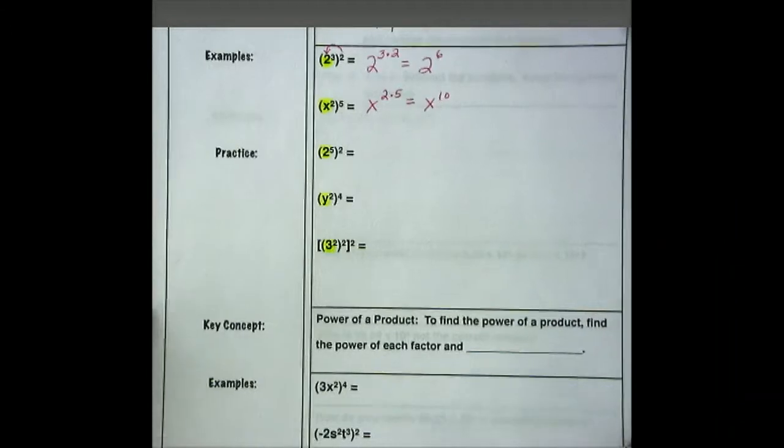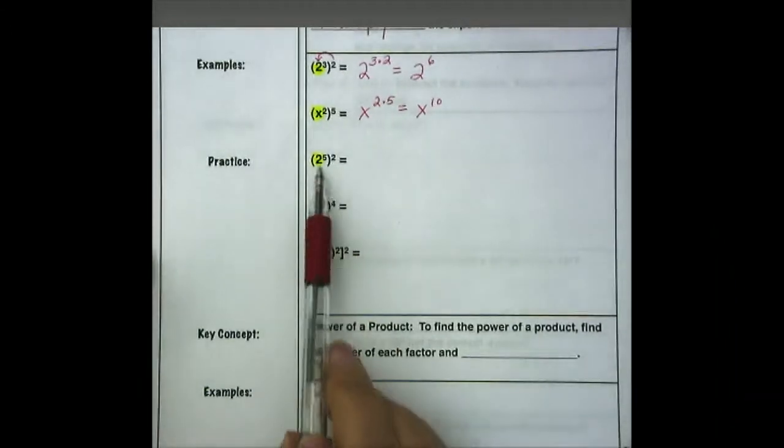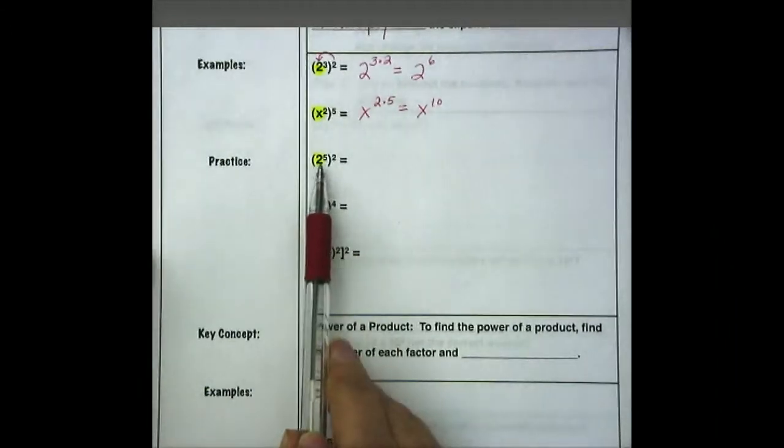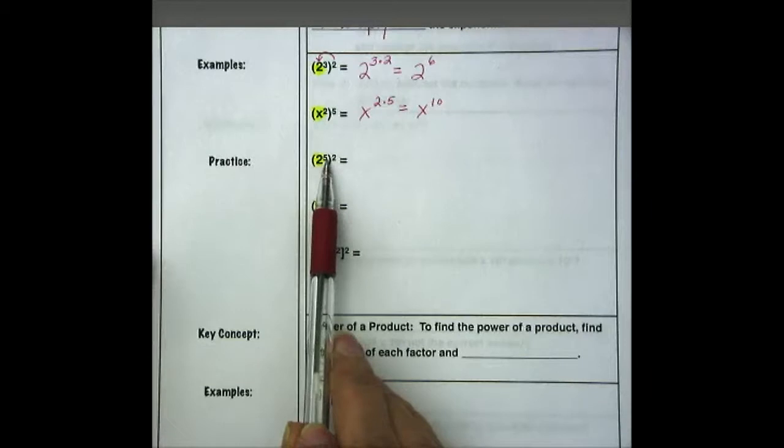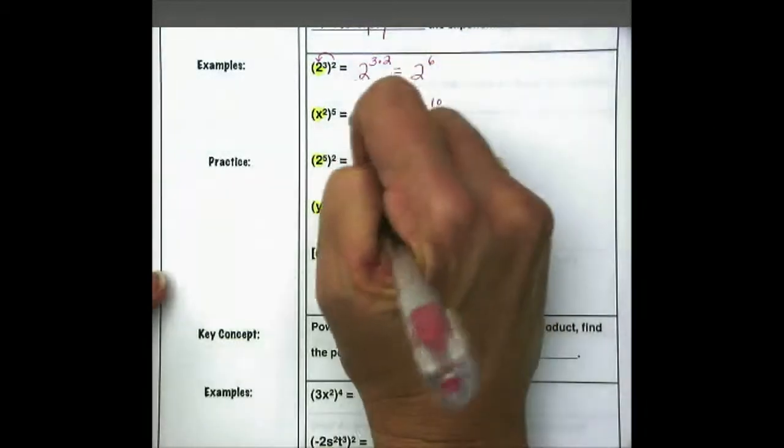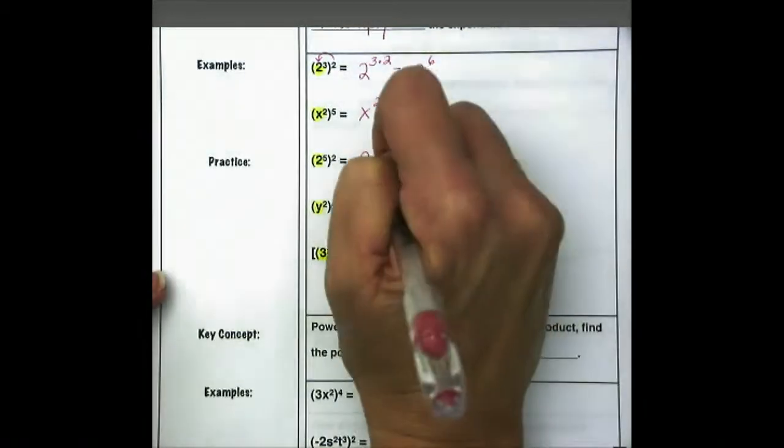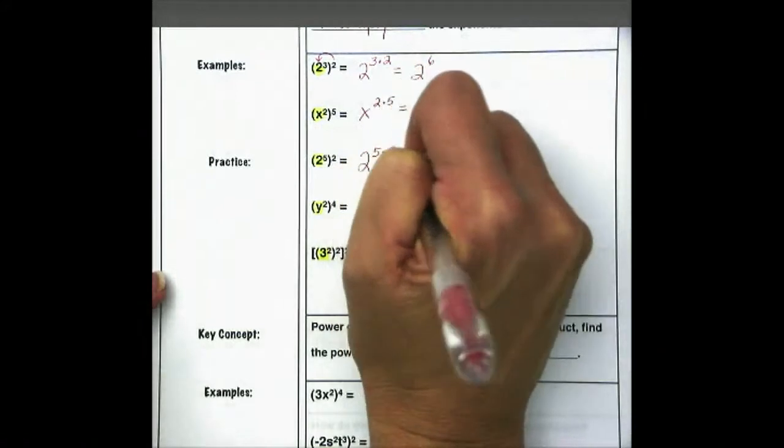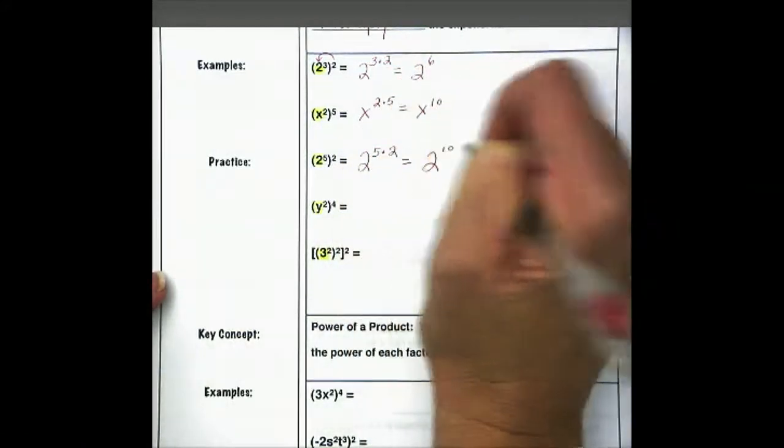Okay, since this is a short lesson, let's take a look at how we would work these problems. We have 2 to the 5th power raised to the 2nd power. So the base stays the same, the base is 2. 5 times 2, so we get 2 to the 10th power.